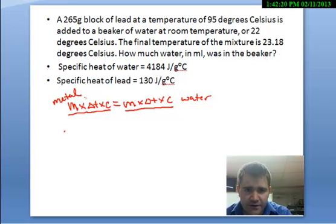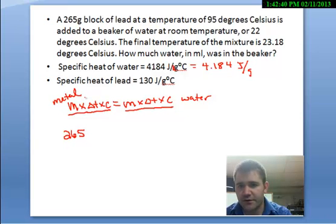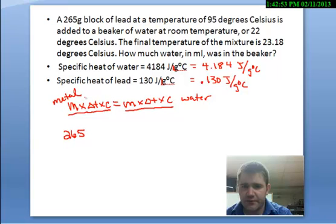Alright, for the metal we had 265 grams of lead. And I need to change these values up here. This is per kilogram. So this is going to be 4.184 joules per gram degree Celsius, and this is 0.130 joules per gram degree Celsius, because these should have actually been for kilograms, not for grams. Alright, so these are my specific heats.